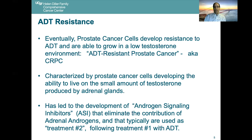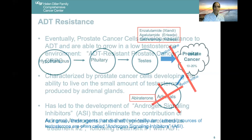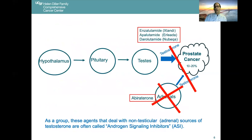This has led to the development of a number of androgen signaling inhibitors, or ASIs, that eliminate the contribution of adrenal androgens. These are typically used as treatment number two, following treatment number one with ADT. The ASIs — enzalutamide, apalutamide, and darolutamide — block uptake of testosterone into the prostate cancer cell. Abiraterone prevents the adrenal glands from making testosterone in the first place.